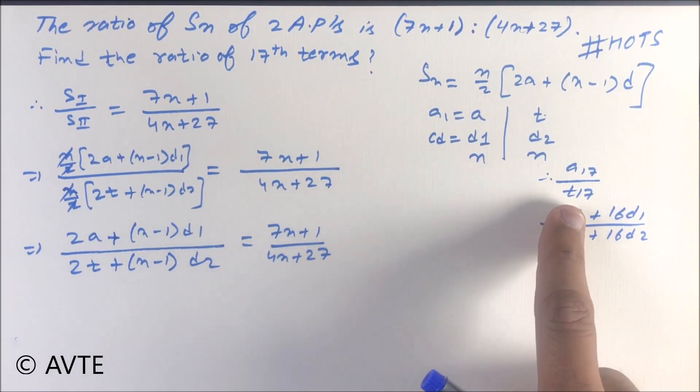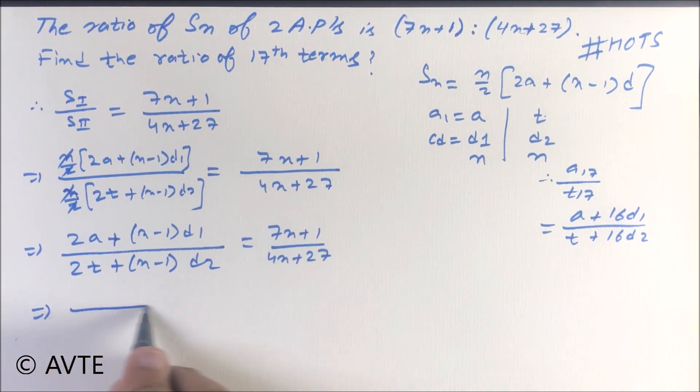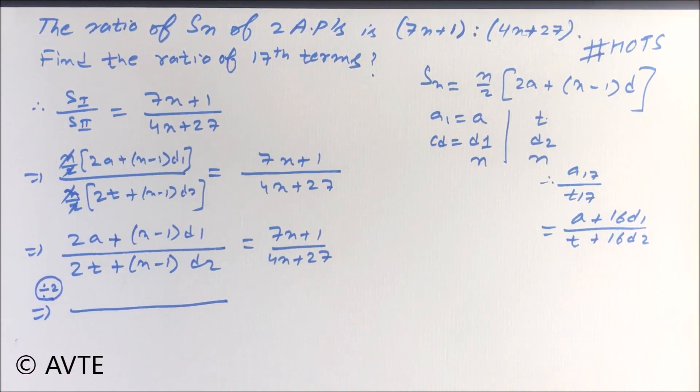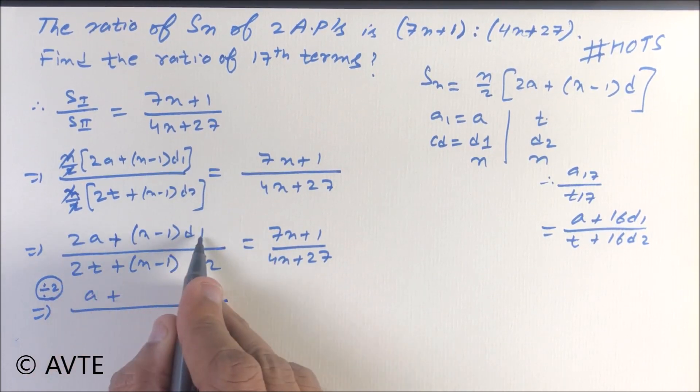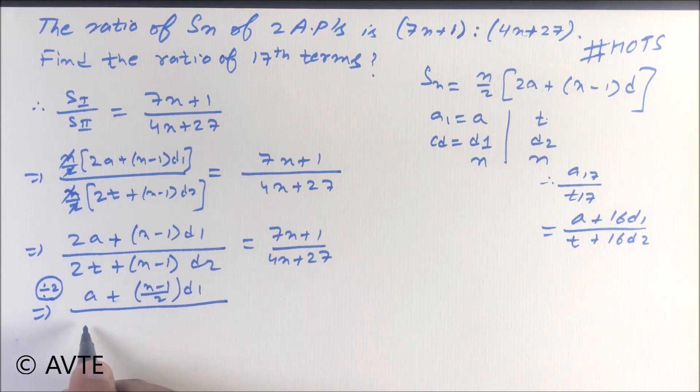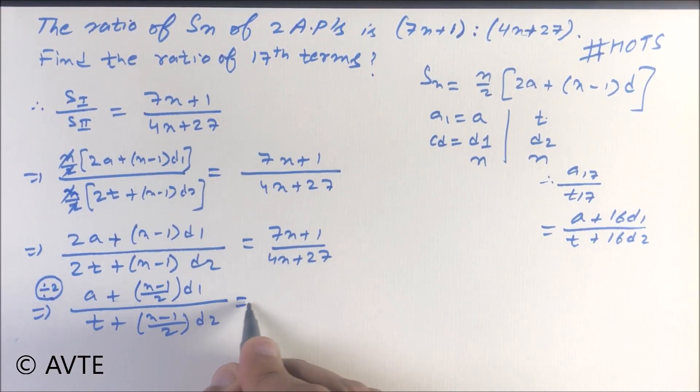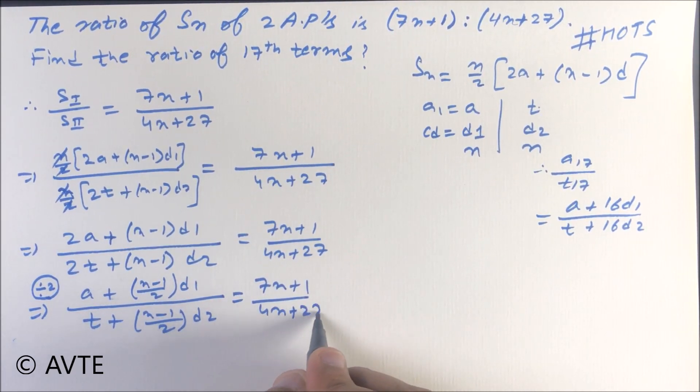And here we have a and t, here we have 2a and 2t. So we will divide the numerator and denominator of the LHS by 2. Here we have a plus n minus 1 upon 2 d1, t plus n minus 1 upon 2 d2. This is 7n plus 1 upon 4n plus 27.